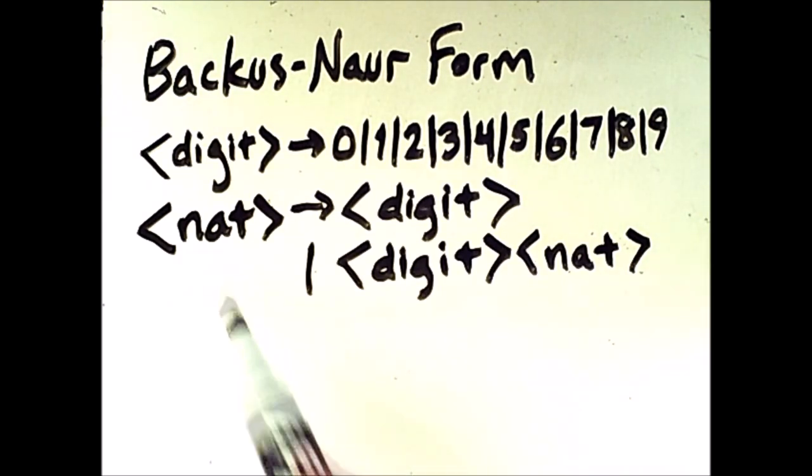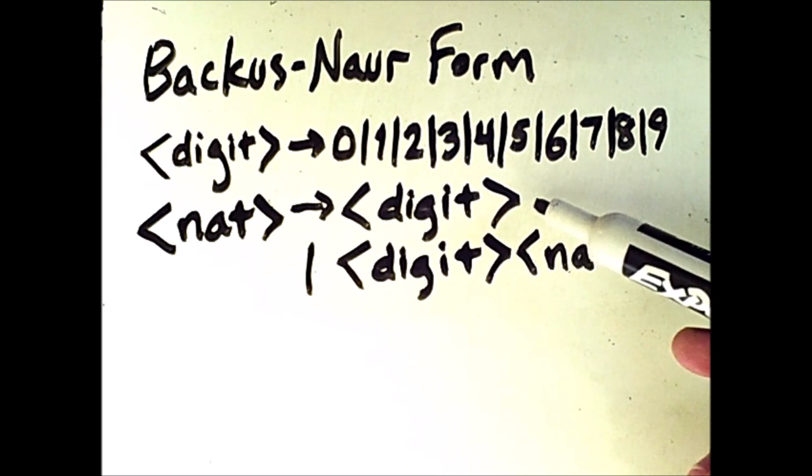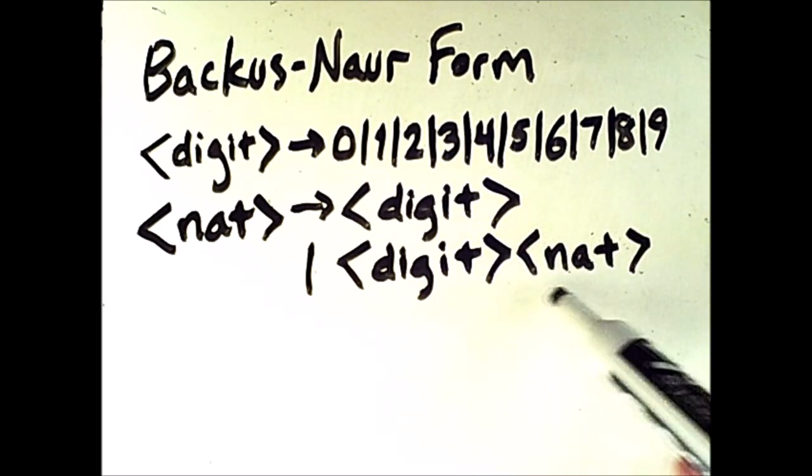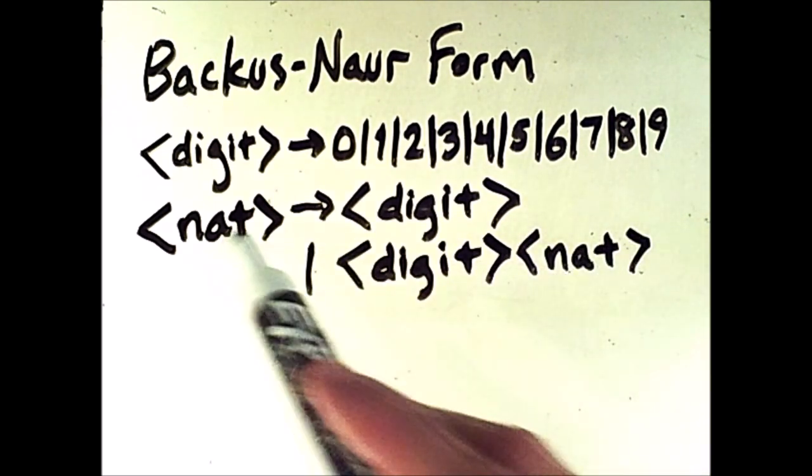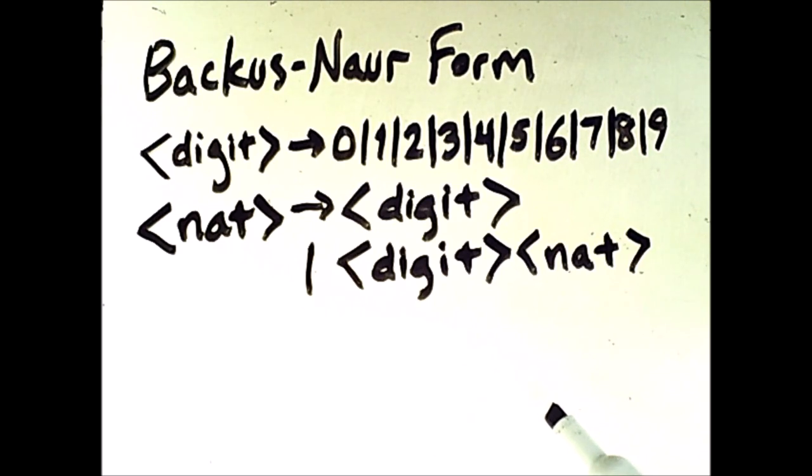So NAT is defined recursively in terms of itself. This first case, with only the digit, is a base case. And this second case, where NAT is called again, is a recursive case.